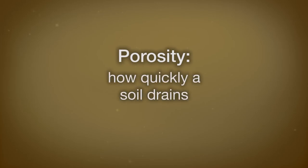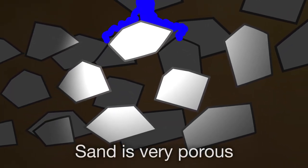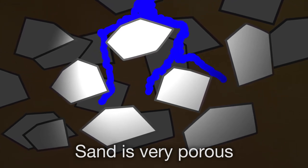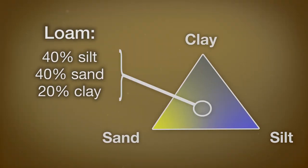Soil texture affects porosity — how quickly a soil drains. Sand particles, the largest of the three components, pack together loosely, allowing more water to pass through in a sandy soil. Clay particles, the smallest of the three components, pack together tightly, making it difficult for roots to penetrate the soil and for water to pass through. The best agricultural soil is a mixture of sand, silt, and clay, allowing for balanced water drainage and nutrient retention. A loam is 40% sand, 40% silt, and 20% clay, and in many cases that is the ideal agricultural soil.